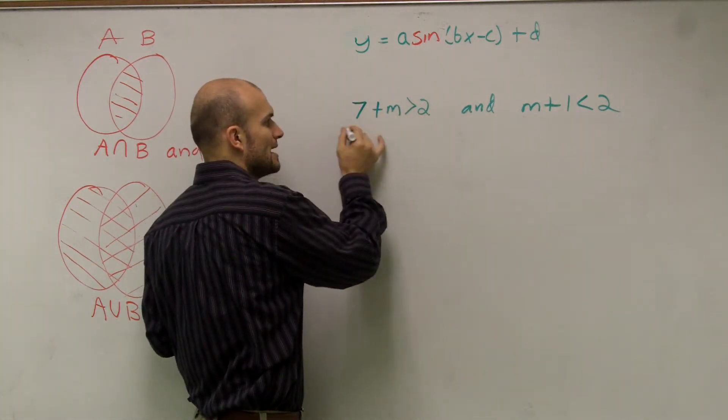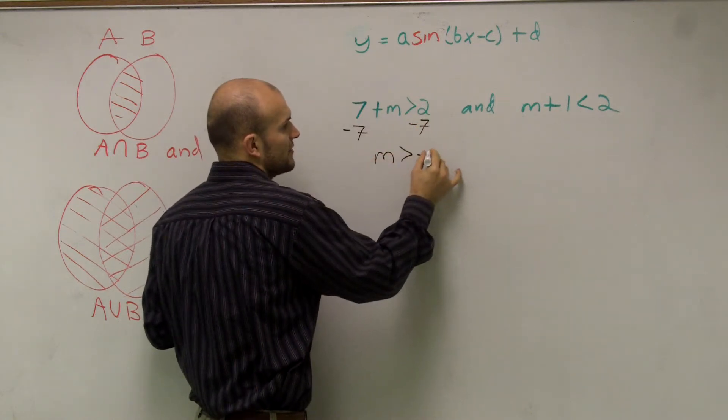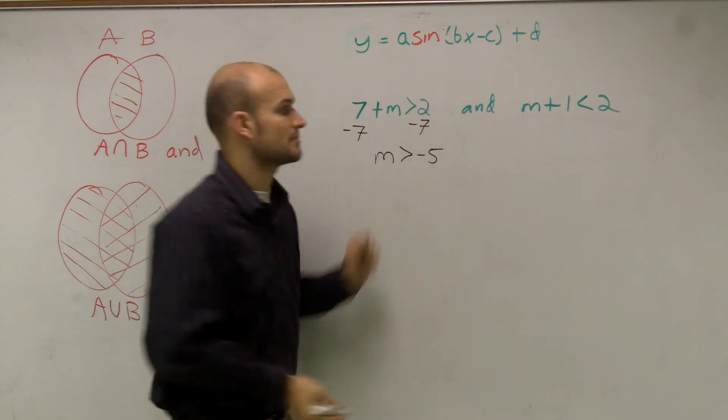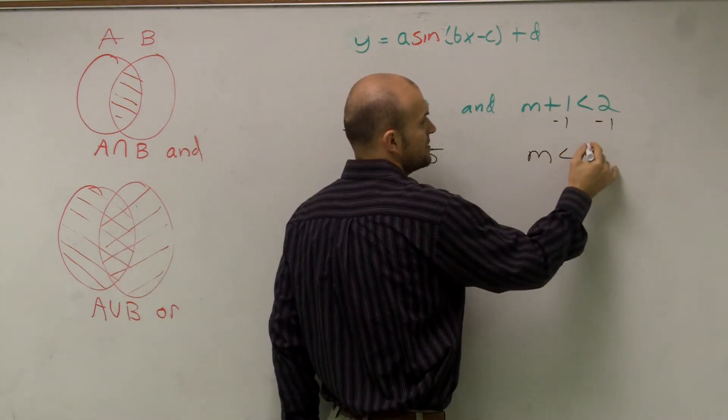So what I'm going to do here, I need to solve my m. So I subtract 7 on both sides. m is greater than negative 5, and here to solve for m, I subtract 1. m is less than 1.